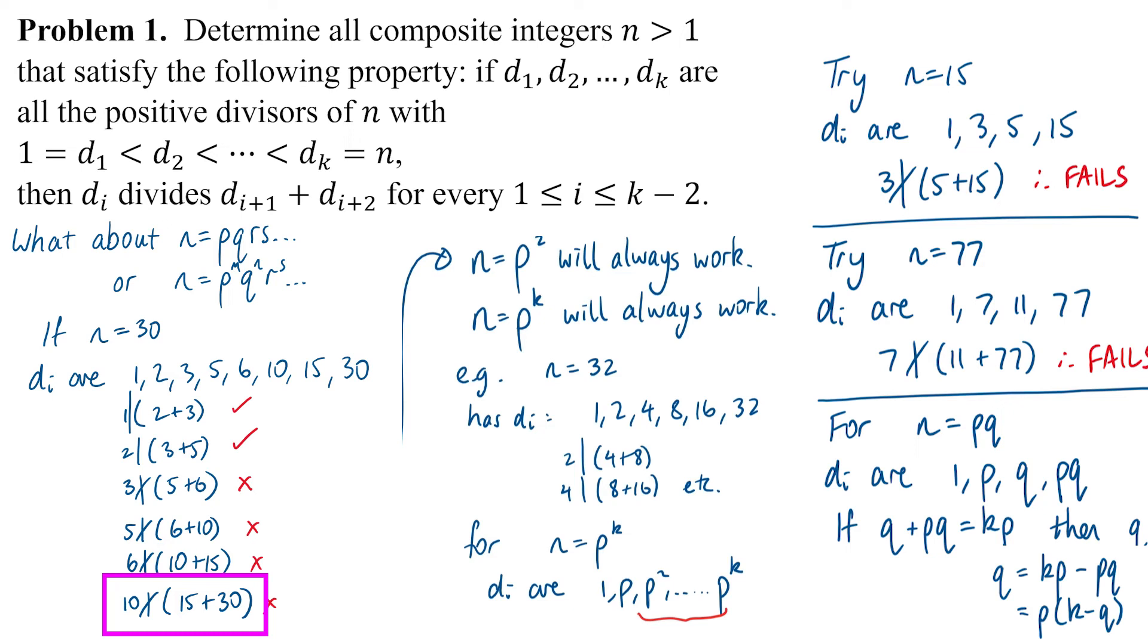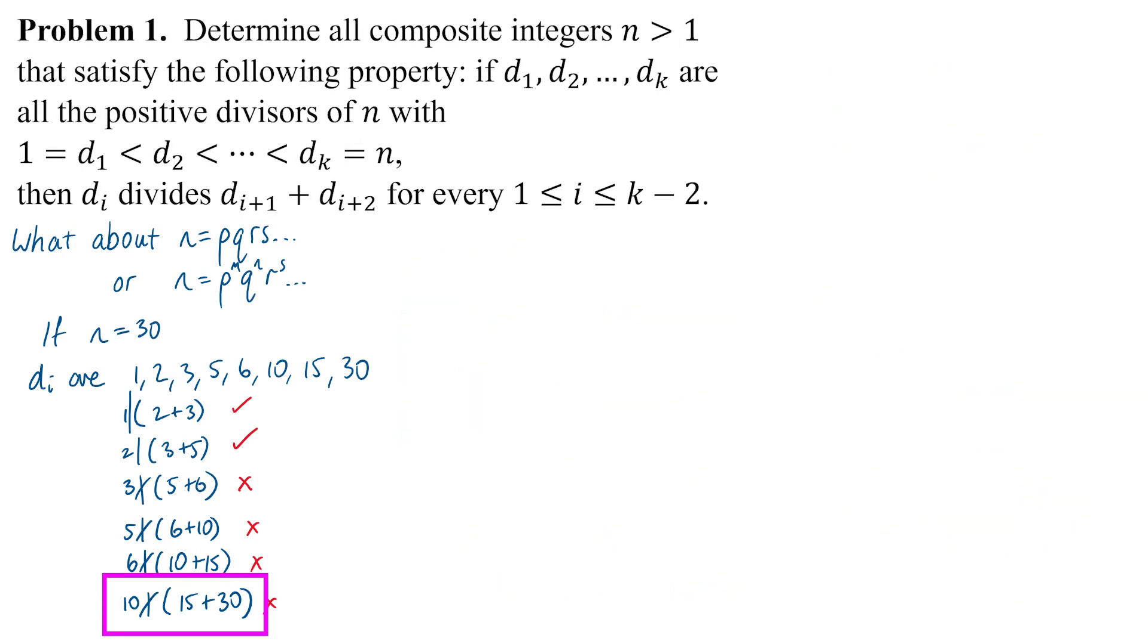Rather than talking about even or odd, to generalize, the key thing is that 30 is divisible by that smallest prime, which in this case is 2. And 10 is also divisible by 2, but 15 is not.